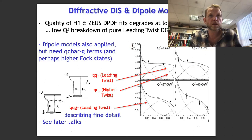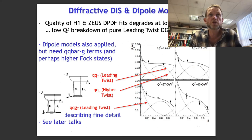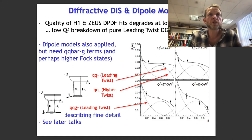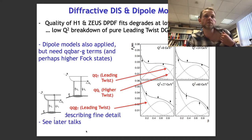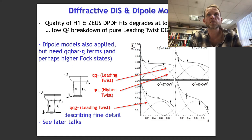Dipole models have certainly been applied to diffractive DIS and have been done by many groups. There is a complication: just taking q q-bar final states isn't sufficient; you need to take into account q q-bar-g dipoles — an octet-octet dipole as well — in order to describe low-x data. But this approach does still exist and people are still working on applying dipoles to inclusive diffractive DIS.